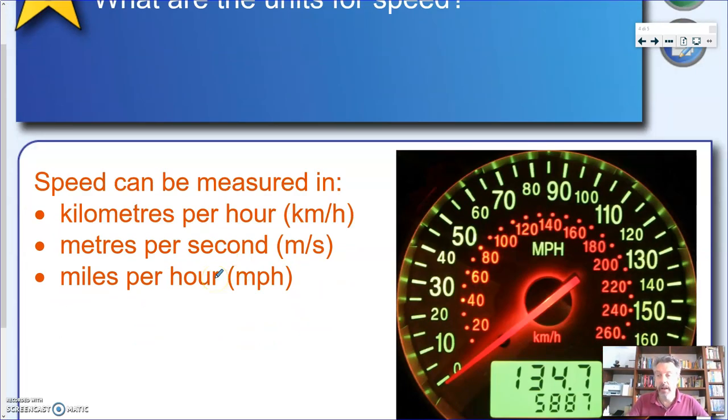For instance, most of the time, if we want to talk about the speed of an object, we use kilometers per hour. So how many kilometers you traveled in one hour? If you want to represent that in symbol, it will be km over h.